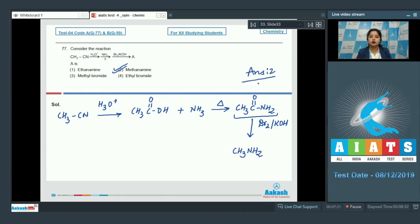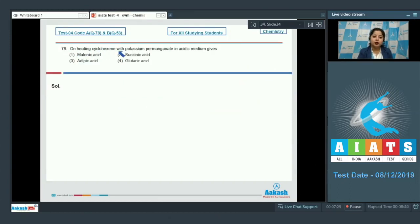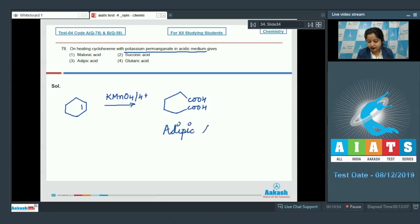Moving to next question, which is 78. On heating cyclohexene with potassium permanganate in acidic medium gives, the options are malonic acid, succinic acid, adipic acid and glutaric acid. As it is very clear that potassium permanganate in acidic medium does oxidative cleavage of alkenes giving respective carboxylic acid. Cyclohexene, when reacts with KMNO4 in acidic medium, a compound formed is hexane-1,6-dioic acid. This compound is also called as adipic acid. That means the correct answer for this question is option number 3.